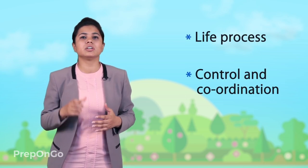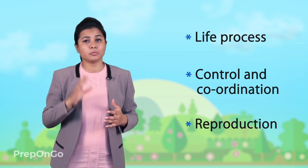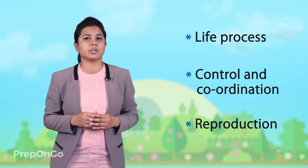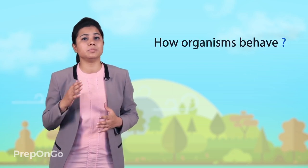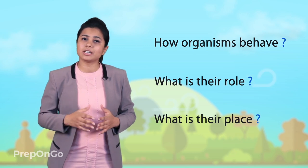Hello everyone. In the preceding chapters of biology, we have learned about the different processes which go inside the body of the living organism. We have seen the different life processes, different techniques of control and coordination, and also about the different methods used by the living organisms to reproduce. We understood how the body of living organisms works from inside, but we never talked about how these organisms behave in the outside world. So let's move a step further and see how these organisms behave, what is their role, and what is their place in the world.